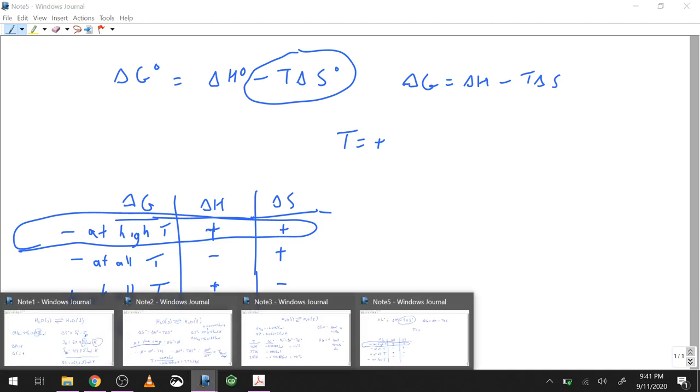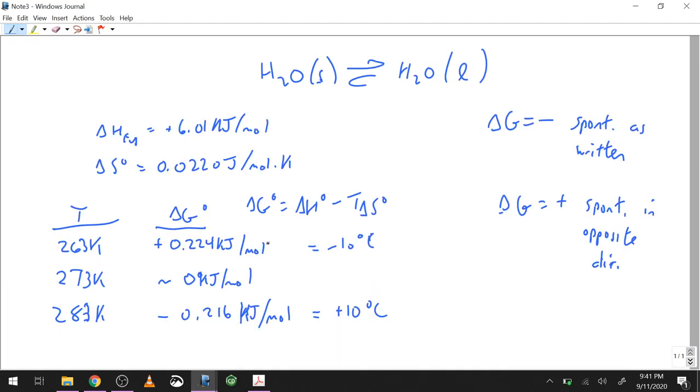Delta G becomes spontaneous as I increase the temperature, which is exactly what we saw here. It was not spontaneous, and then I begin to warm it up, which is equilibrium where there's no change in energy. Then as I continue raising the temperature, it becomes spontaneous. So this is the quantitative version of that qualitative look at direction. We're going to use this quite a lot in terms of interpreting reactions later on. We're going to go into one more phase change problem because I want you to see the error that's possible by using those standard values. So that'll be the next video.